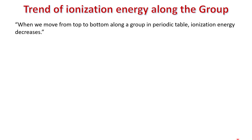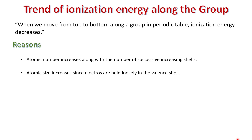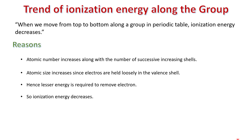Now let's look at the trend of ionization energy along a group. When we move from top to bottom along a group in the periodic table, ionization energy decreases. The reasons behind this are that atomic number increases along with the number of successive shells, and atomic size also increases. Since electrons are held more loosely in the valence shell as they get farther from the nucleus with the addition of more shells, less energy is required to remove them. Therefore, ionization energy decreases.